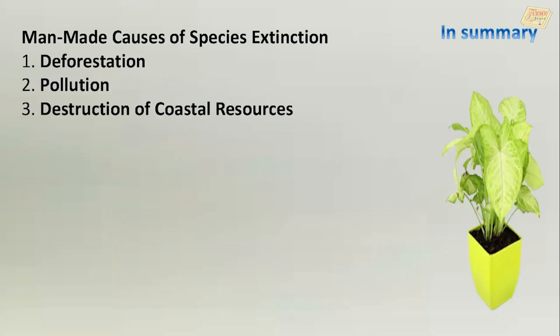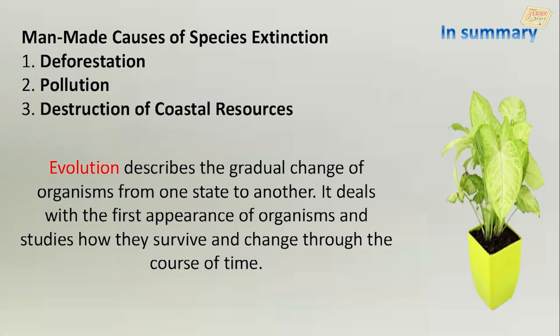The man-made causes of species extinction are deforestation, pollution, and destruction of coastal resources. Evolution describes the gradual change of organisms from one state to another. It deals with the first appearance of organisms and studies how they survive and change through the course of time.